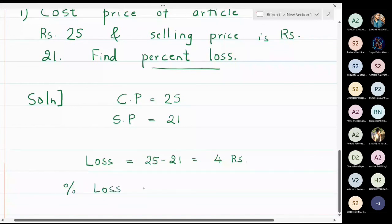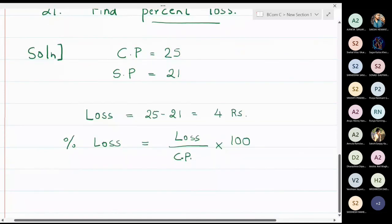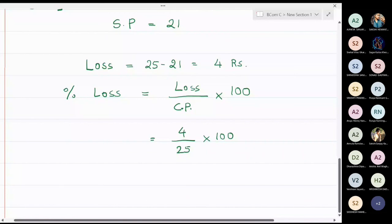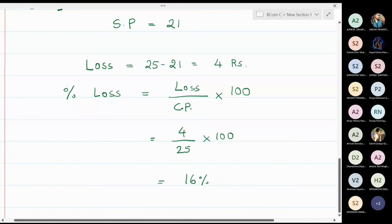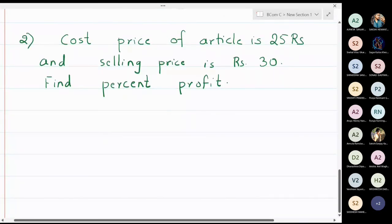The formula for percentage loss is loss divided by CP multiplied by 100. Percentage loss and percentage profit are always related to the cost price, never to the selling price. So percentage loss equals 4 divided by 25, multiplied by 100. That gives 400 divided by 25, which equals 16. The percentage loss is 16 percent.